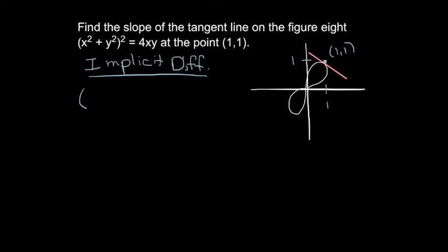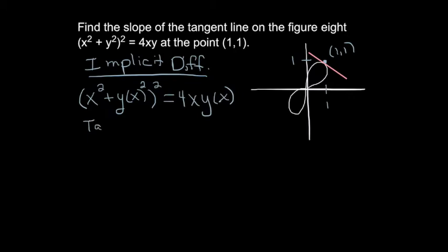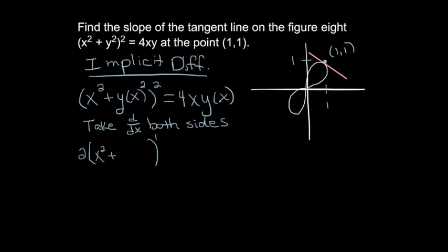The first step is to replace every y with y of x to visualize that y is a function of x. Now take the derivative of both sides with respect to x. The outermost function on the left is the outer square, so bring the 2 down, decrease the power to 1, and copy down the inside function. Then multiply times the derivative of the inside. The derivative of x squared plus y of x squared: the derivative of x squared is 2x.